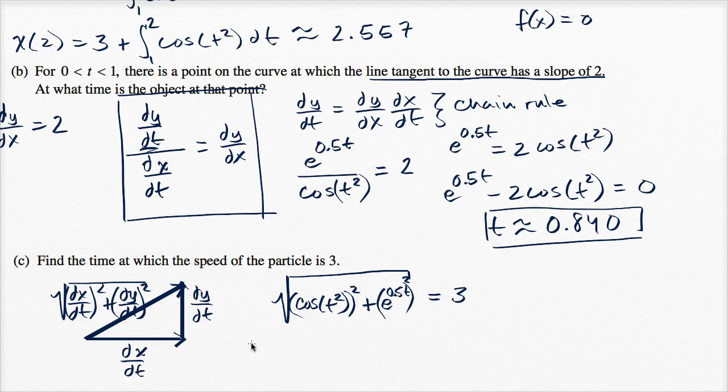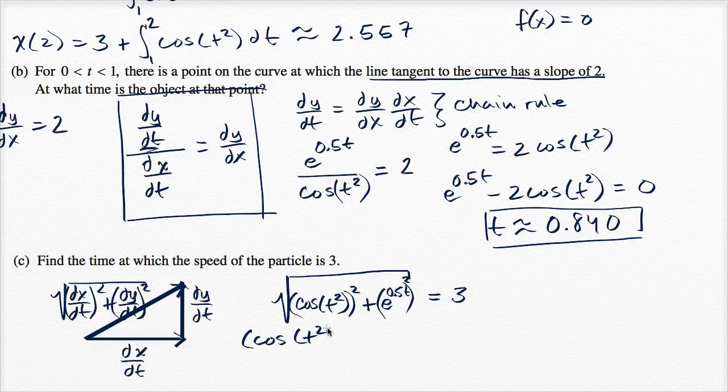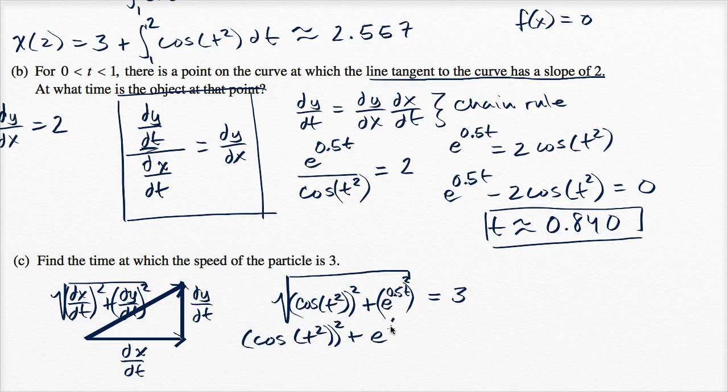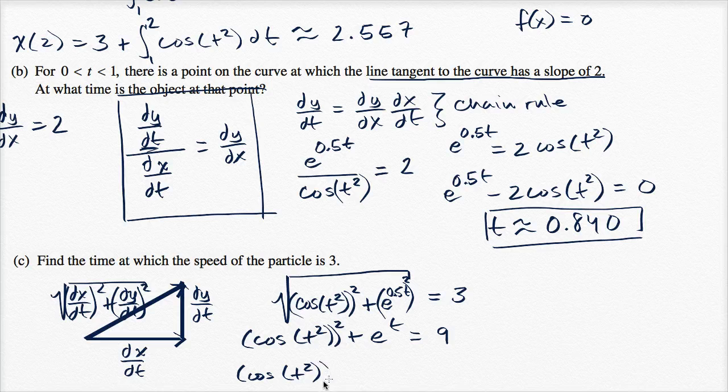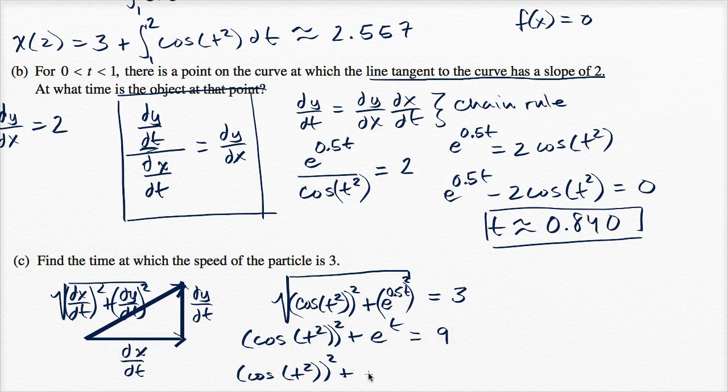We could square both sides, and you would get cosine of T squared, squared, plus E to the 0.5T, and then squaring that, well, two times 0.5 is just one. So this is the same thing as E to the T is equal to nine. And now we can subtract nine from both sides, and we get cosine of T squared, squared, I could have written cosine squared of T squared, but this makes it a little bit clearer. Plus E to the T minus nine is equal to zero.